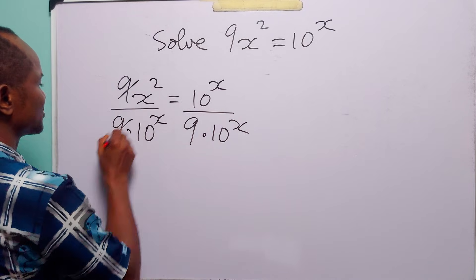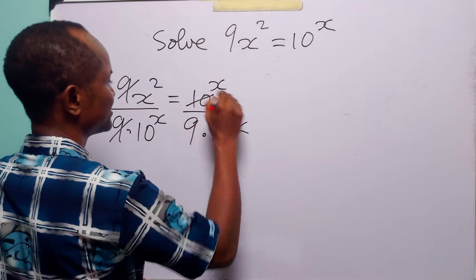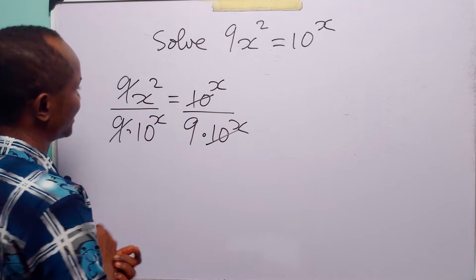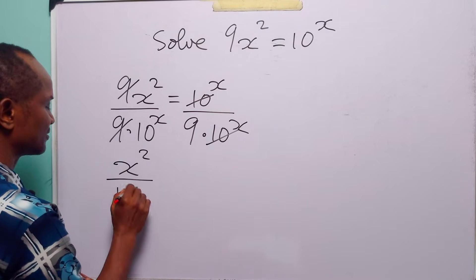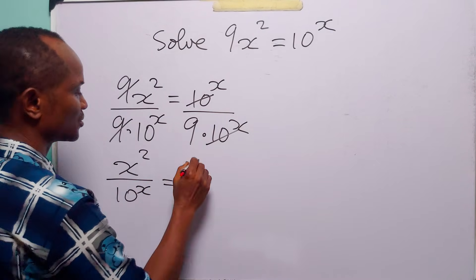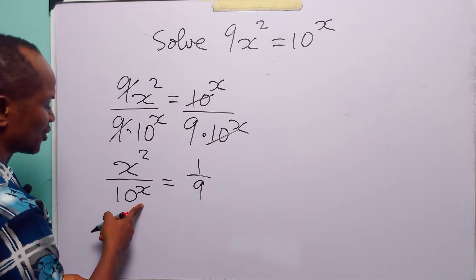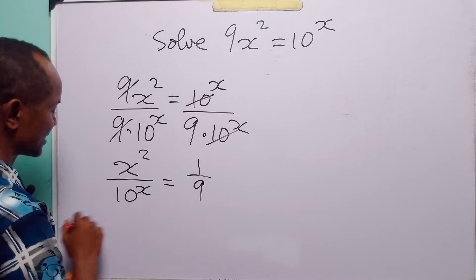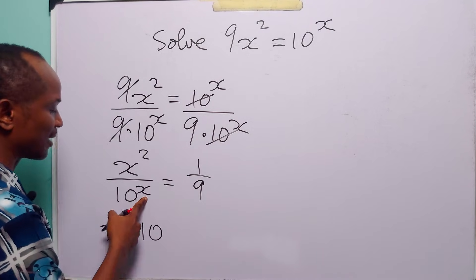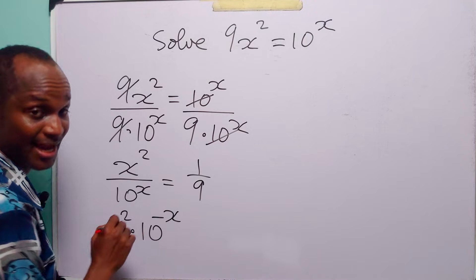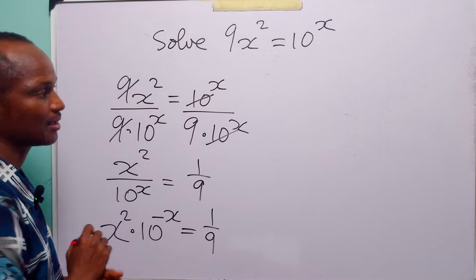On the left-hand side, this is going to take care of that, while on the right-hand side, this is going to take care of that, leaving us with x squared over 10 to the power x is equal to 1 over 9. Of course, we can write this left-hand side as x squared multiplied by 10 to the power minus x, and this is equal to 1 over 9.